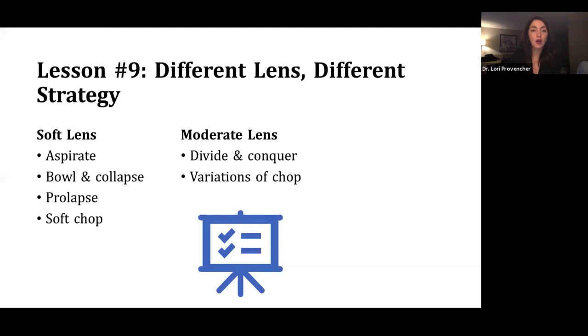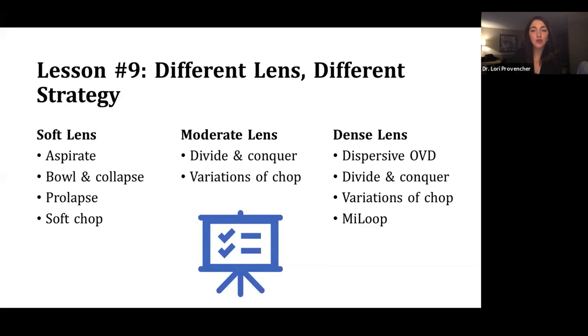And then for dense lenses, you definitely should consider using a dispersive viscoelastic. Assuming you're going to use more phaco energy, this will help coat and protect the corneal endothelium. And Divide and Conquer works well. You are going to probably use a little more energy for this, but surgeons that are good at Divide and Conquer can really get away with less phaco energy on a denser setting. And then various versions of chop are very great for dense lenses. But if you have a really dense brunescent cataract with a leathery posterior plate, I think using MyLoop can be very useful.